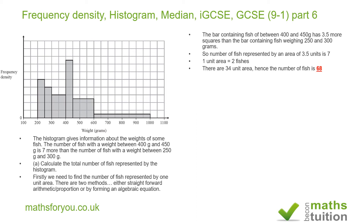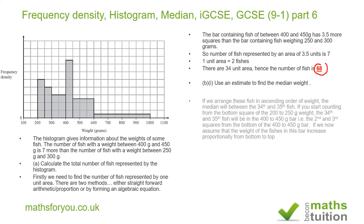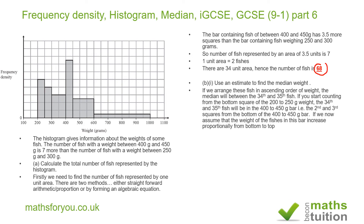Part b says: use an estimate to find the median weight. Because we have 68 fish — which is even — we expect the median weight to be between the 34th and the 35th fish. That would correspond to the 17th square and the 17.5th square.